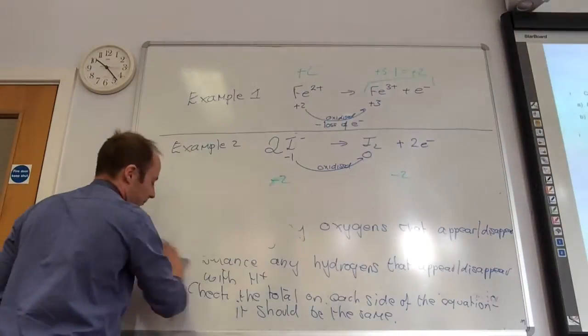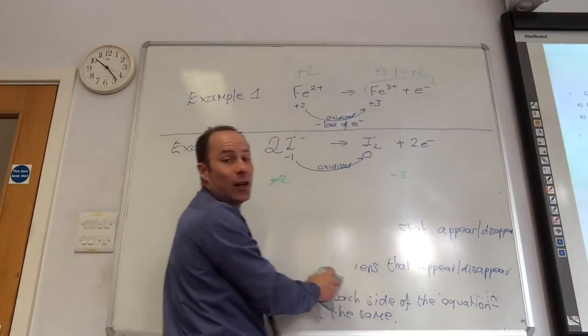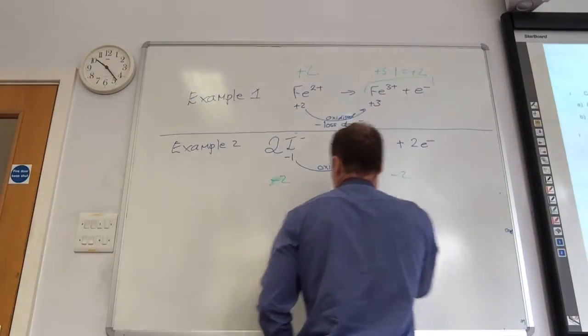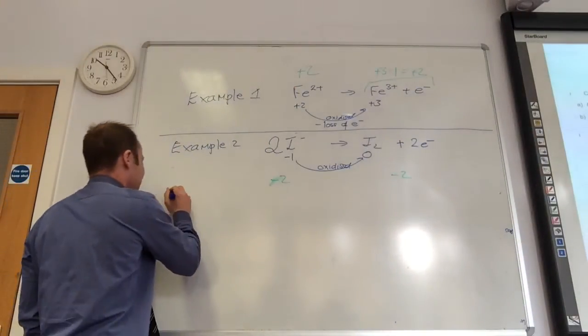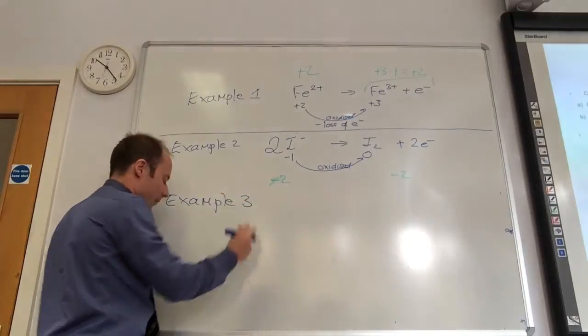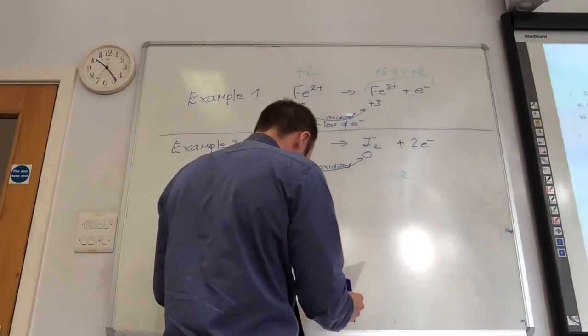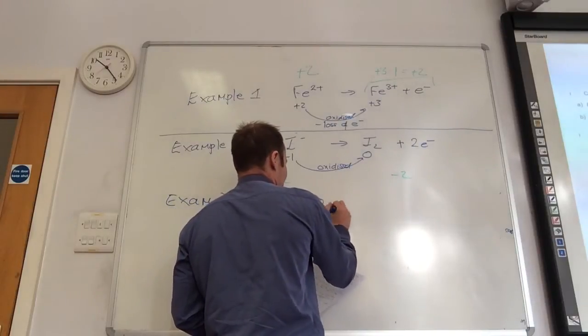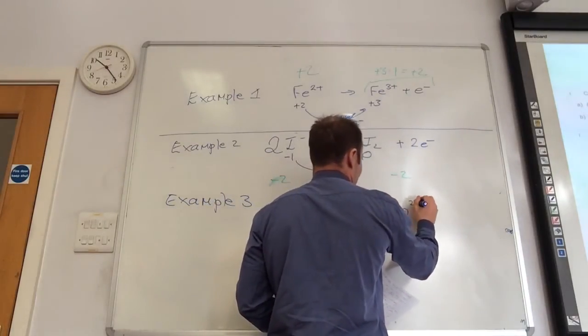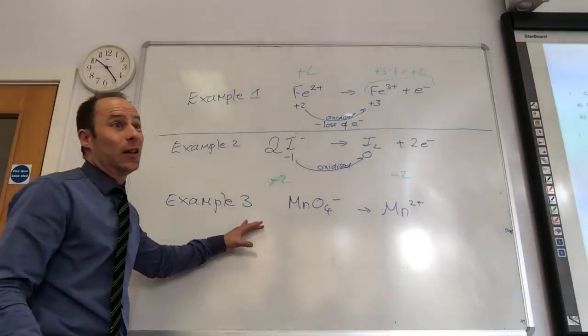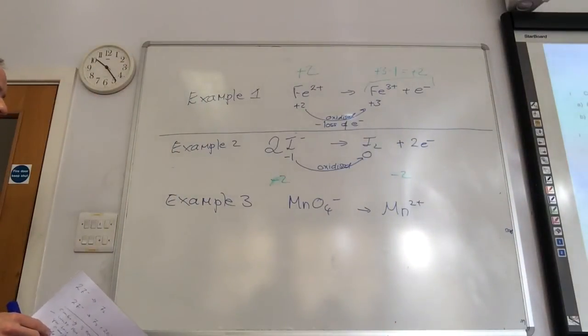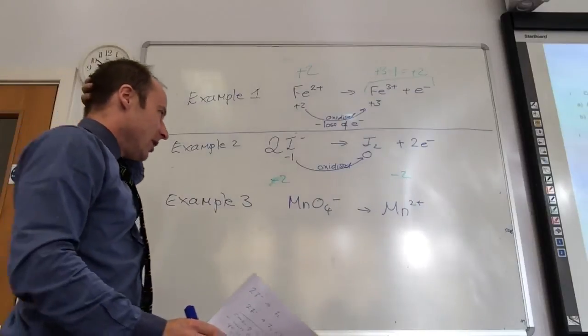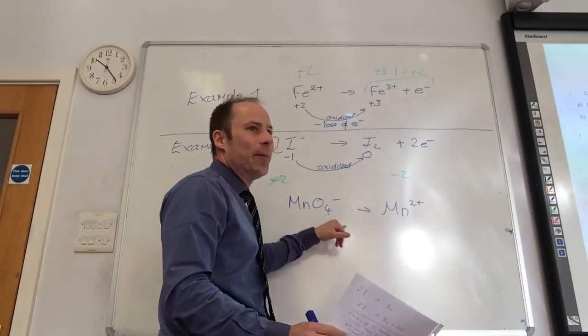Right, this is the harder one. Example number three, once we've done this one you're on your own. This is one I reckon you'll love because it's going to come up. So, MnO4- becoming Mn2+. How on earth are we going to tackle this one?